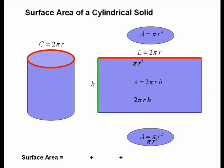Putting those all together, we get that the surface area for a cylinder is pi r squared plus 2 pi r h plus pi r squared. More commonly, we write this as 2 pi r squared plus 2 pi r h.